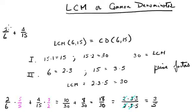let's take an example of fraction addition where we have 2/6 plus 4/15 and we want to find the denominator between 6 and 15. So again, the least common multiple of 6 and 15 is going to be the same as the common denominator of 6 and 15.